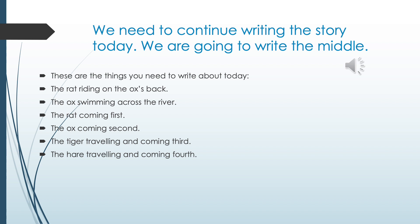For today's lesson you need to continue writing your story underneath the piece you've already started. You're going to think about what happens when the race starts. You need to write about how the rat was riding on the ox's back, the ox swimming across the river, the rat came first in the race, the ox came second, the tiger travelled and came third, and how the hare travelled and came fourth.